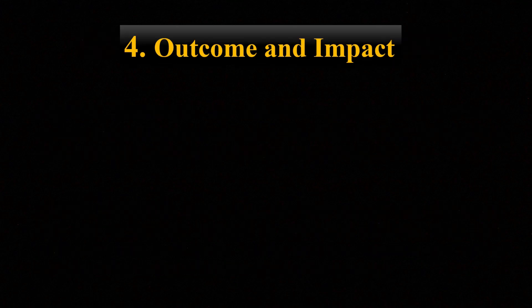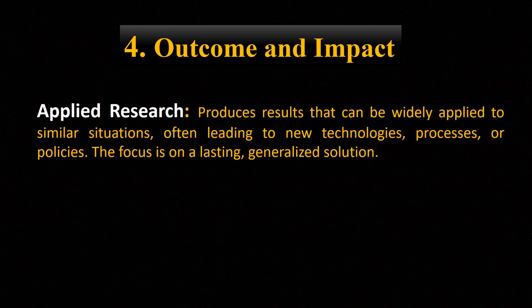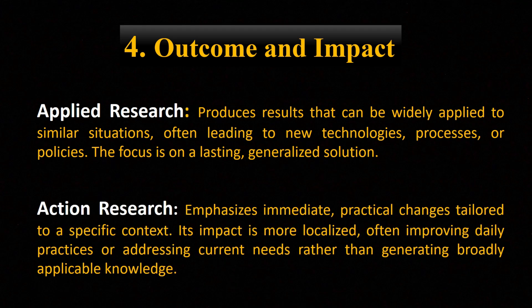Outcome and Impact: Applied research produces results that can be widely applied to similar situations, often leading to new technologies, processes, or policies, with a focus on a lasting, generalized solution. Action research emphasizes immediate, practical changes tailored to a specific context. Its impact is more localized, often improving daily practices or addressing current needs, rather than generating broadly applicable knowledge.